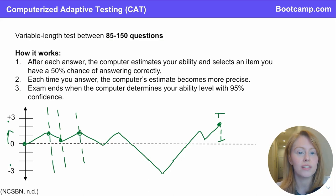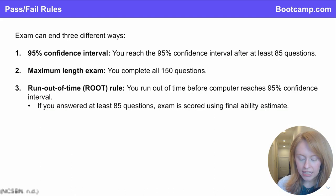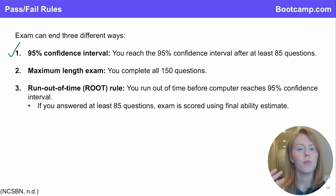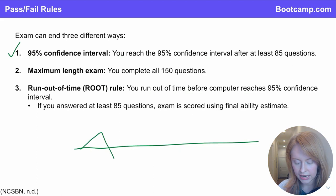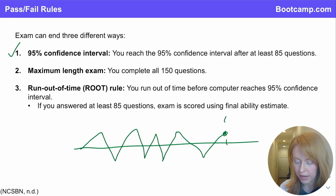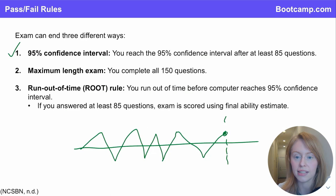Now let's look at the pass-fail rules. In the example we just walked through, that candidate passed under the 95% confidence interval rule. But what happens if by the end of your exam you haven't achieved that 95% confidence interval? Let's say, for example, you go through your exam answering questions correctly and incorrectly, but by the end of the test your confidence interval is not yet 95% and it still straddles the passing line. So you reach the maximum length of exam — 150 questions — the exam ends, and then your pass-fail decision is made based on whether you are above or below the passing standard at the end of the exam.